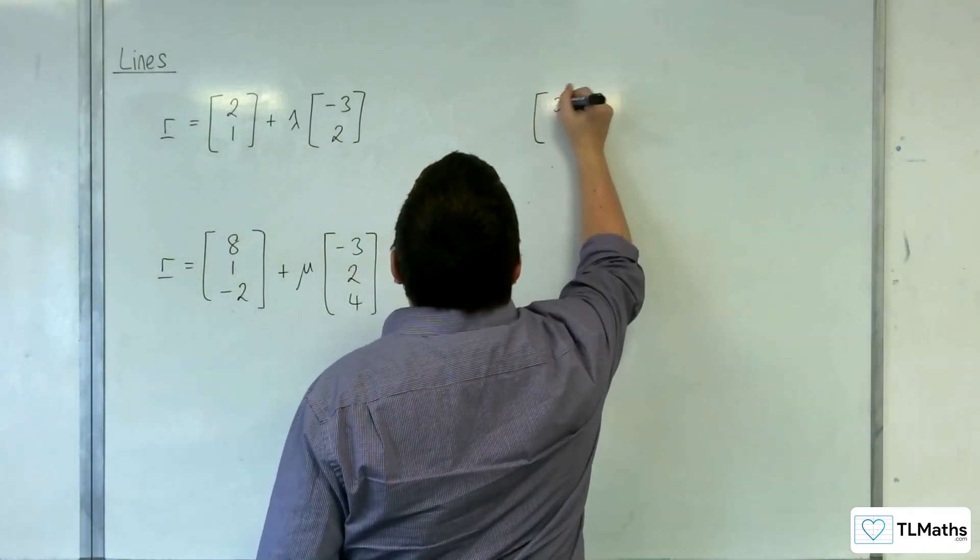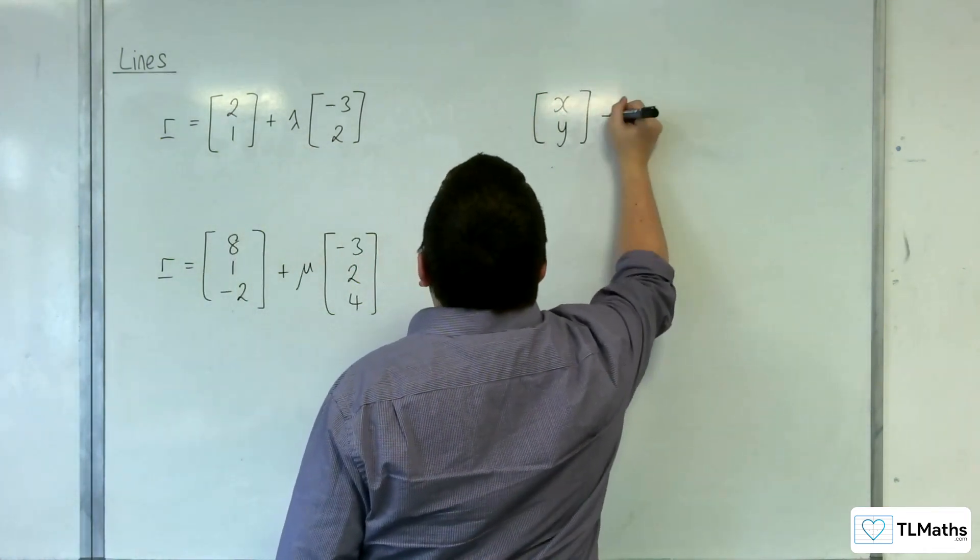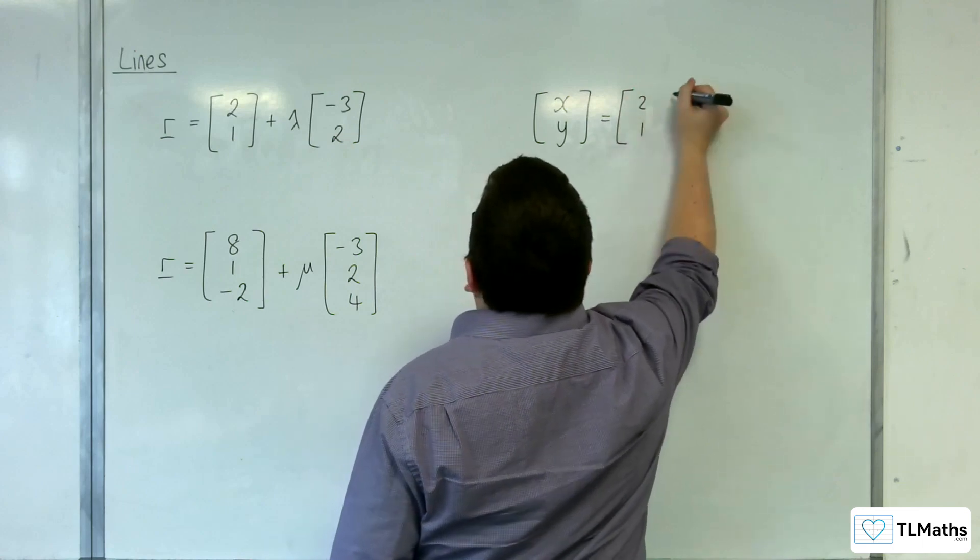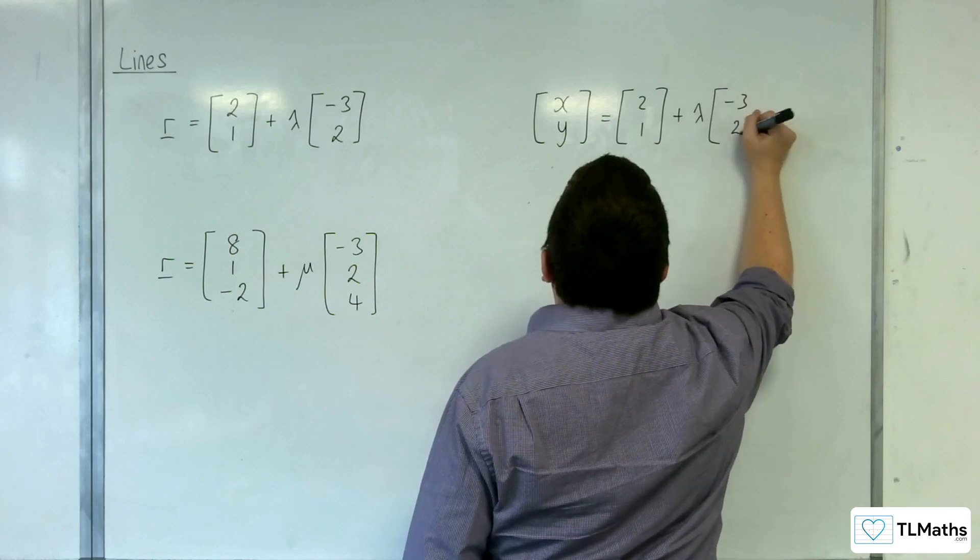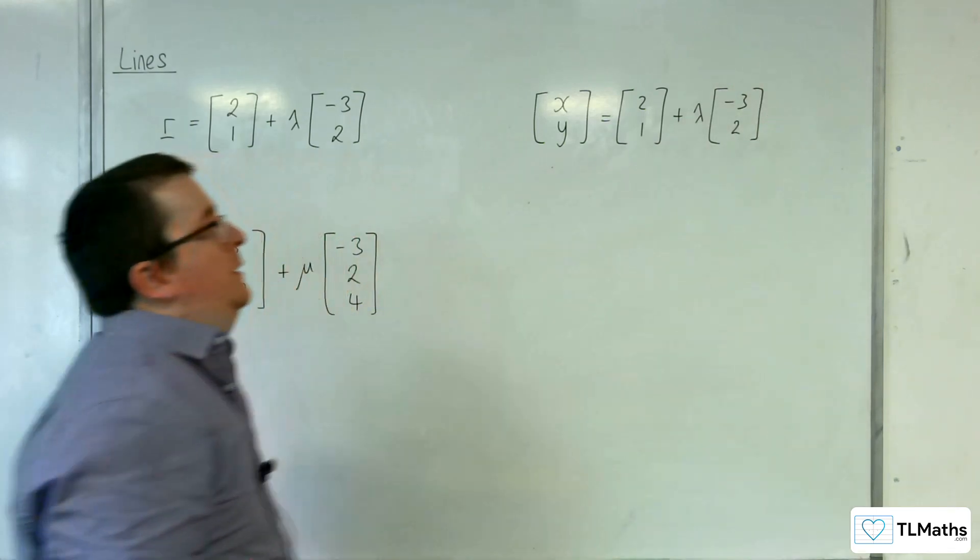So, we've got xy equals 2, 1 plus lambda lots of minus 3, 2.